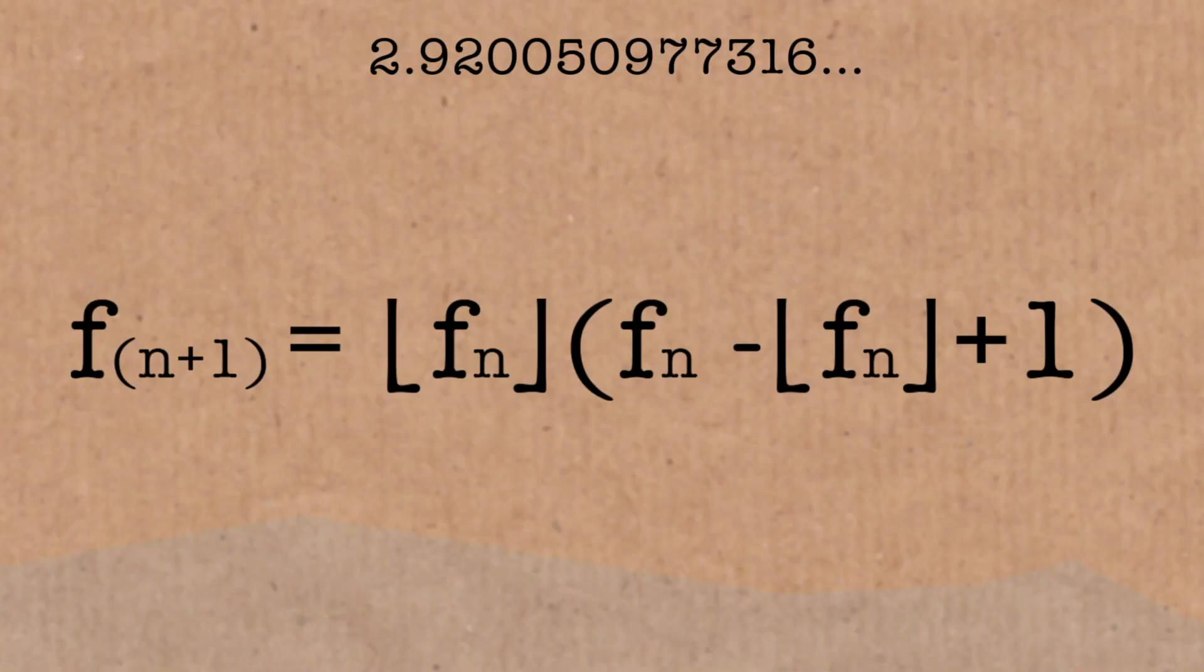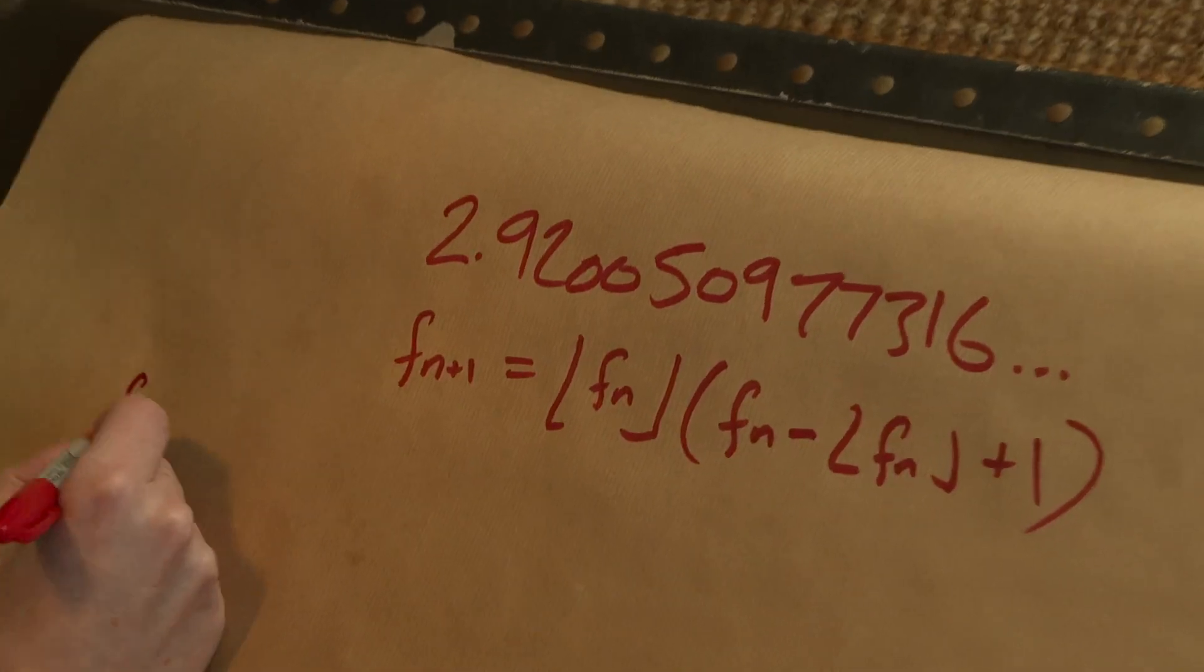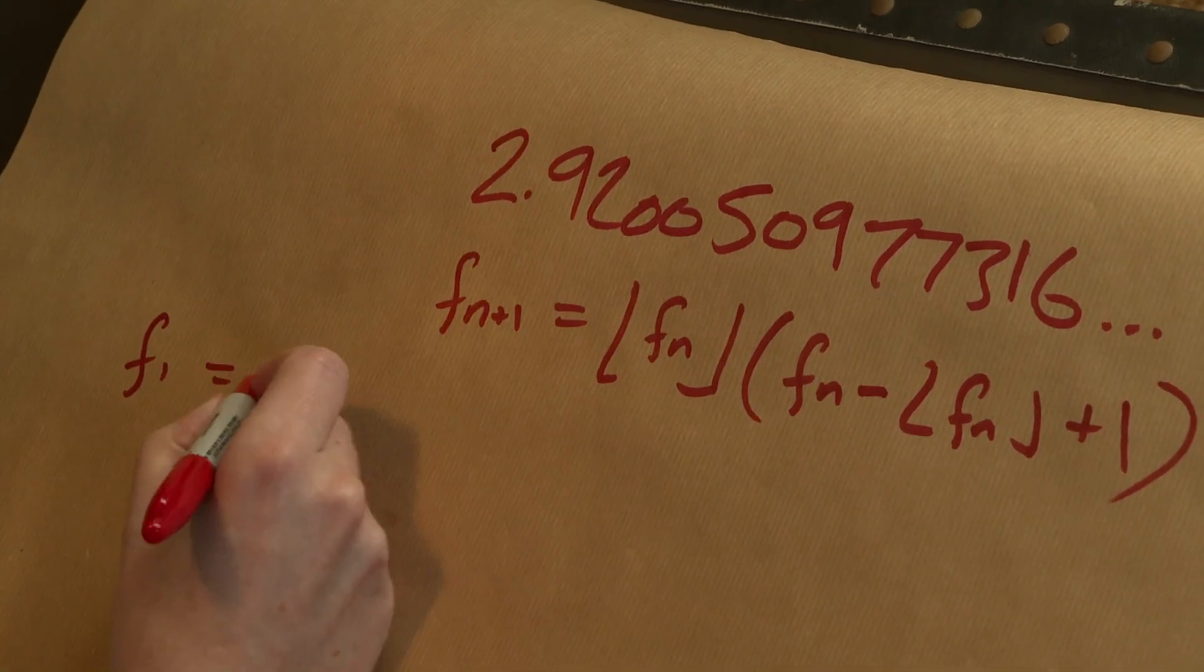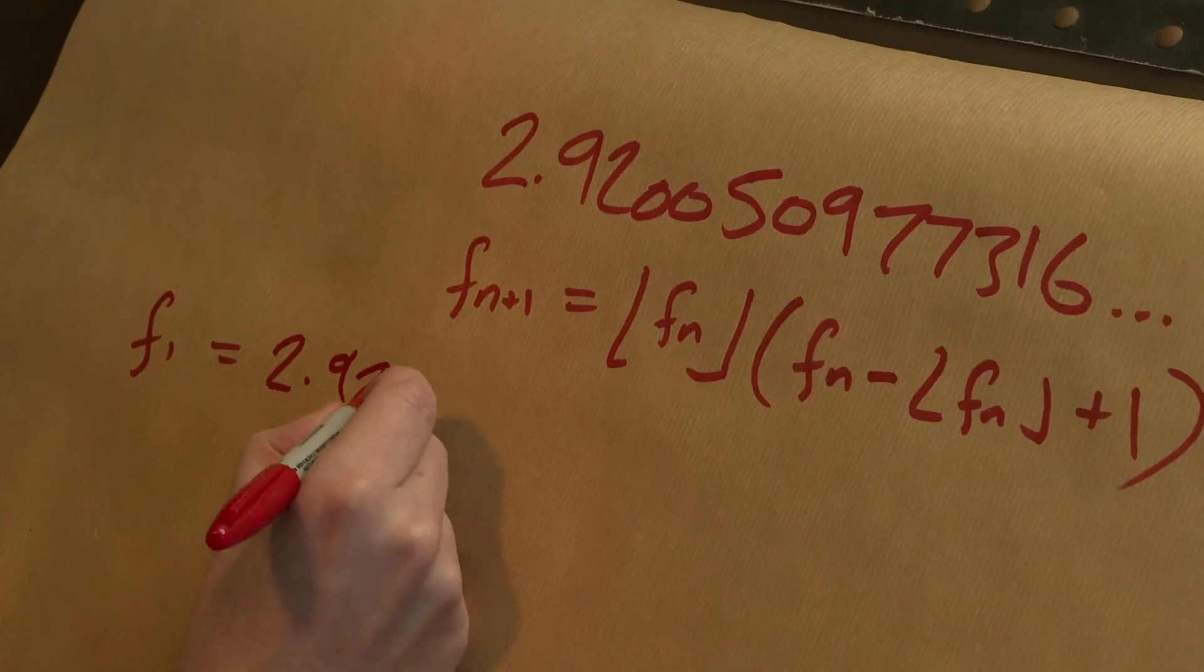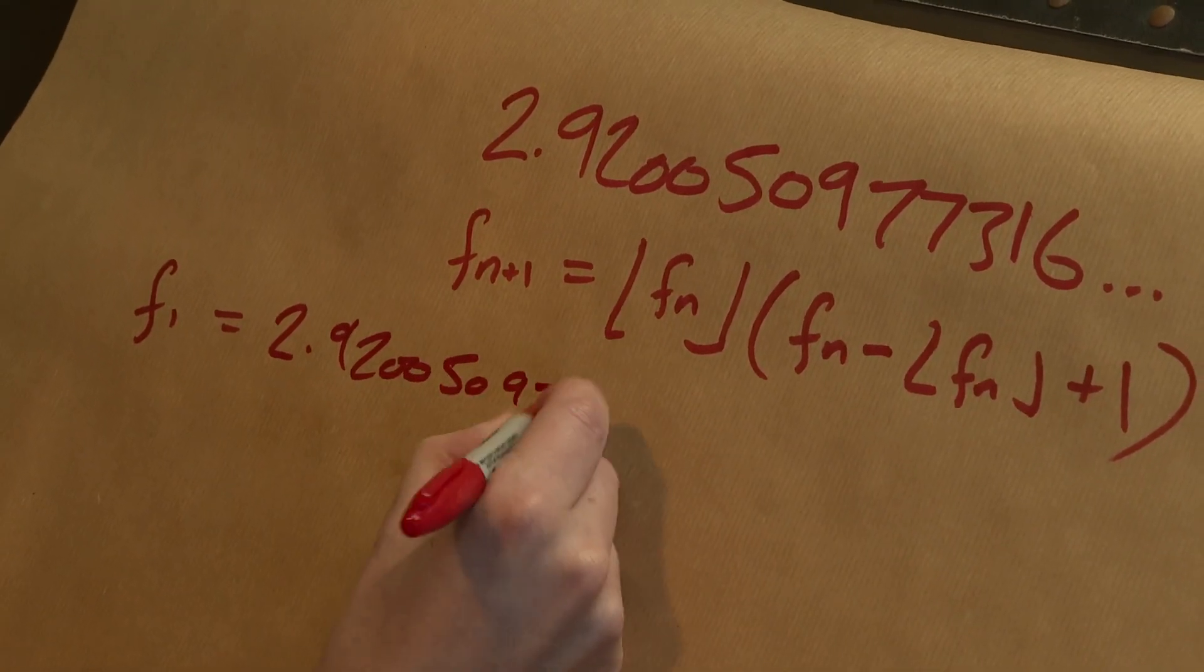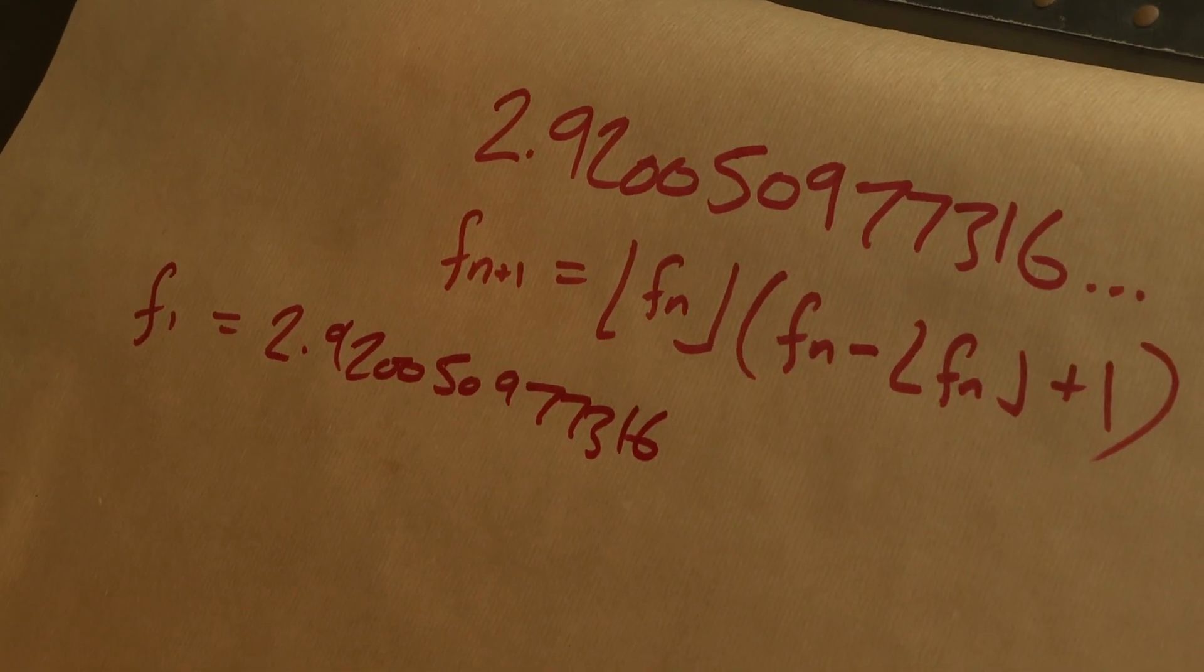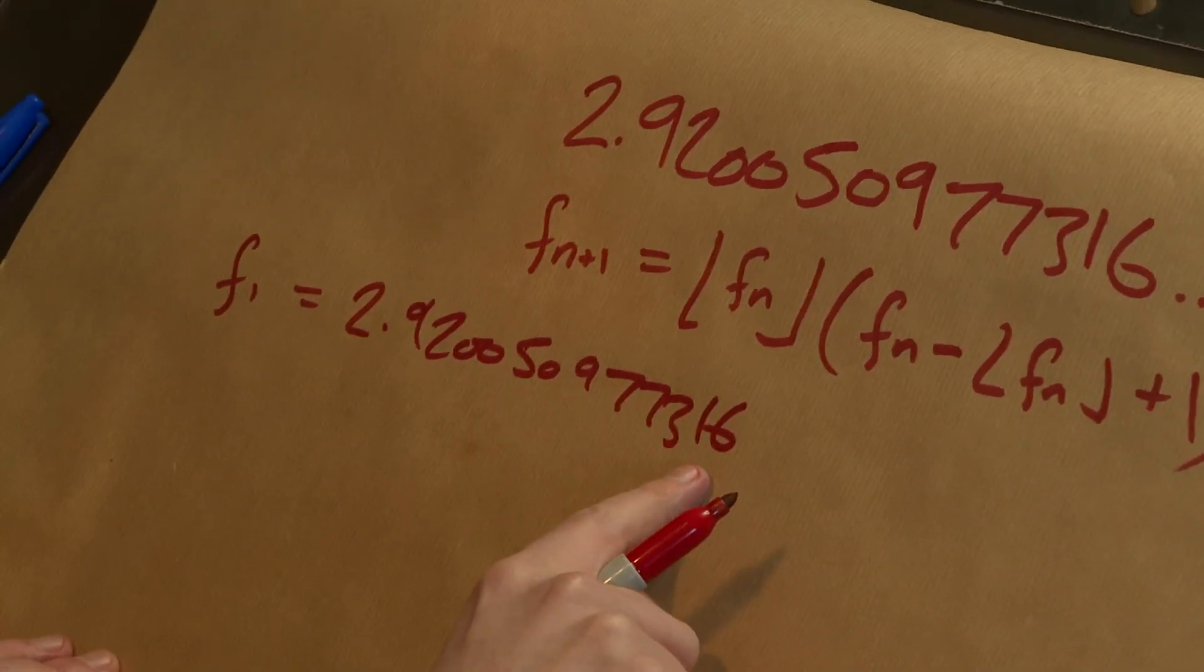I'm going to prove it, we'll start with the constant. So that's going to be the first number in our sequence. Let's start with f1. First number in my sequence is this thing, 2.9200, and the rest. And by the way, I will point out that if I round this down, it's the first prime, it's two.